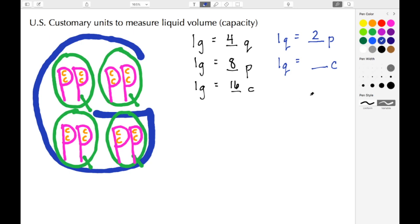And let's move on to another. Let's say we wanted to work on pints. If I had a single pint and I wanted to know how many cups, I look at the P and I see that I have two cups inside of each pint.